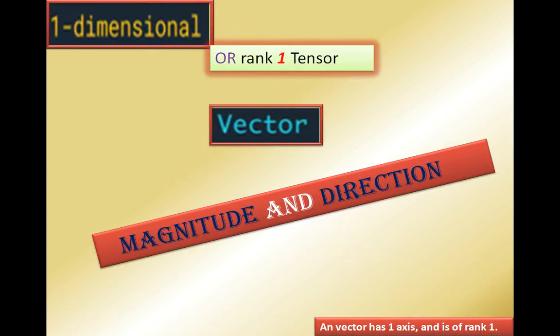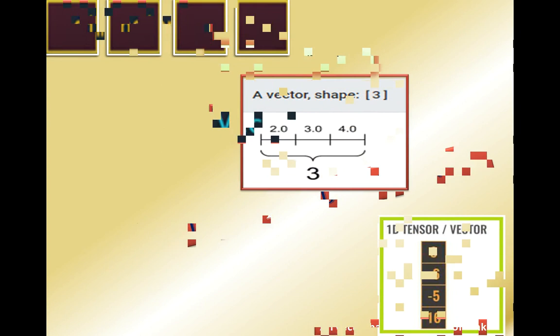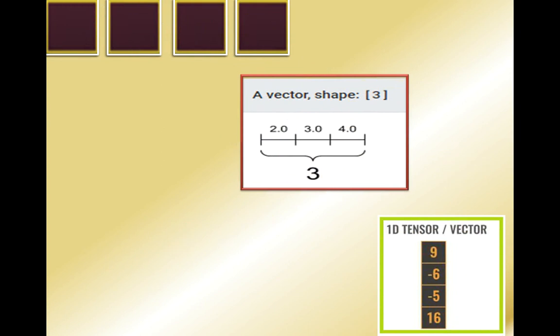Next is the one-dimensional or rank-one tensor. It has only one row and one column and is known as a vector. A 1D tensor is similar to a 1D matrix, and you can say it has magnitude and direction. A vector has one axis and is of rank one. In this example I have taken a vector with shape three, meaning it has three elements.